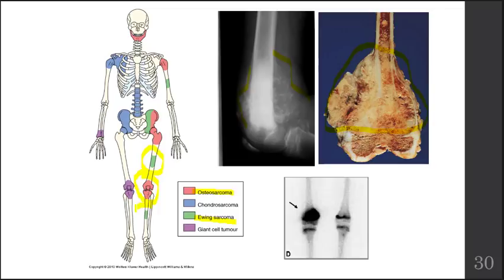If somebody has cancer in a localized area and scans show it hasn't spread, amputation is sometimes recommended to prevent metastasis. However, if the cancer has already spread, for quality of life the limb may be left as it is. Nuclear medicine imaging can show a hot spot that is very unusual and suspicious.